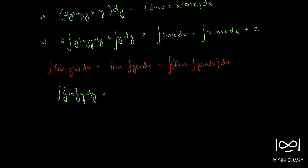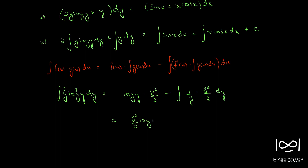Applying integration by parts, this becomes: first function log y times integral of second function y²/2, minus the integral of [derivative of log y times y²/2]. This simplifies to y²/2 · log y minus y²/4 (the y's cancel leaving 1/2). So the integral of y log y equals y²/2 · log y − y²/4.